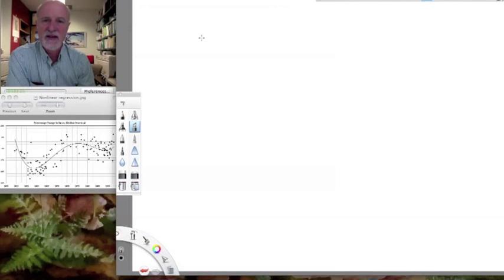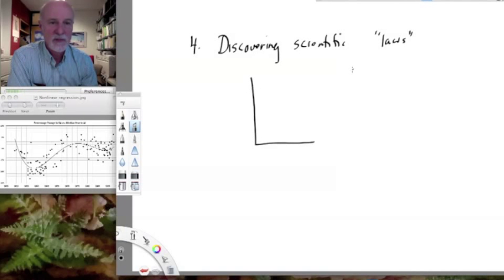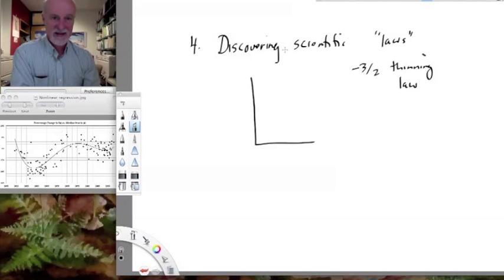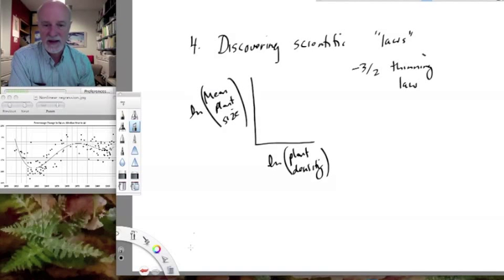Another example is actually discovering scientific laws. Using the word law is always a little bit dicey, but one of the laws in plant ecology is called the minus three halves thinning law. And it's been disputed a lot. There have been a lot of publications on whether it's real or not. But basically, it's the plot of the log of the mean plant size versus log of plant density. It's kind of common understanding that if you plant a lot of things close together, they'll be very small. But if you give them lots of space, they'll get very big. And that's due to the plasticity of plant growth and so forth.